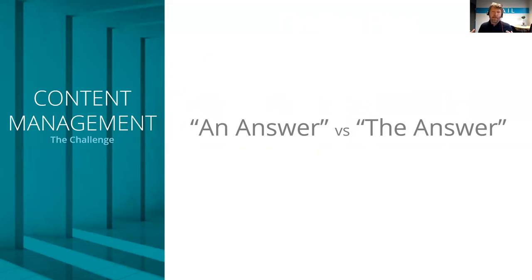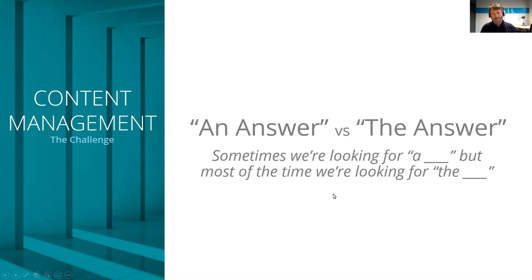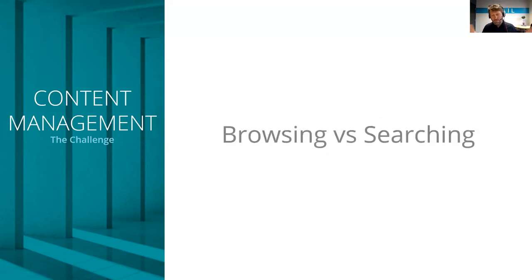One way to think about why I claim Google has it easy: they just have to give you an answer — pull back some information that you'll say on the first page or two, 'okay, I got something, I'm happy, I'll move on.' Whereas what we've been trying to solve is: can we help you find the answer? There's a file I need to be able to put my hands on. Sometimes we're looking for a file generally, but most of the time we're on a journey that says, 'No, I'm looking for a very specific file that fits this criteria.' So I lay that out to get you thinking about why these are different kinds of problems.